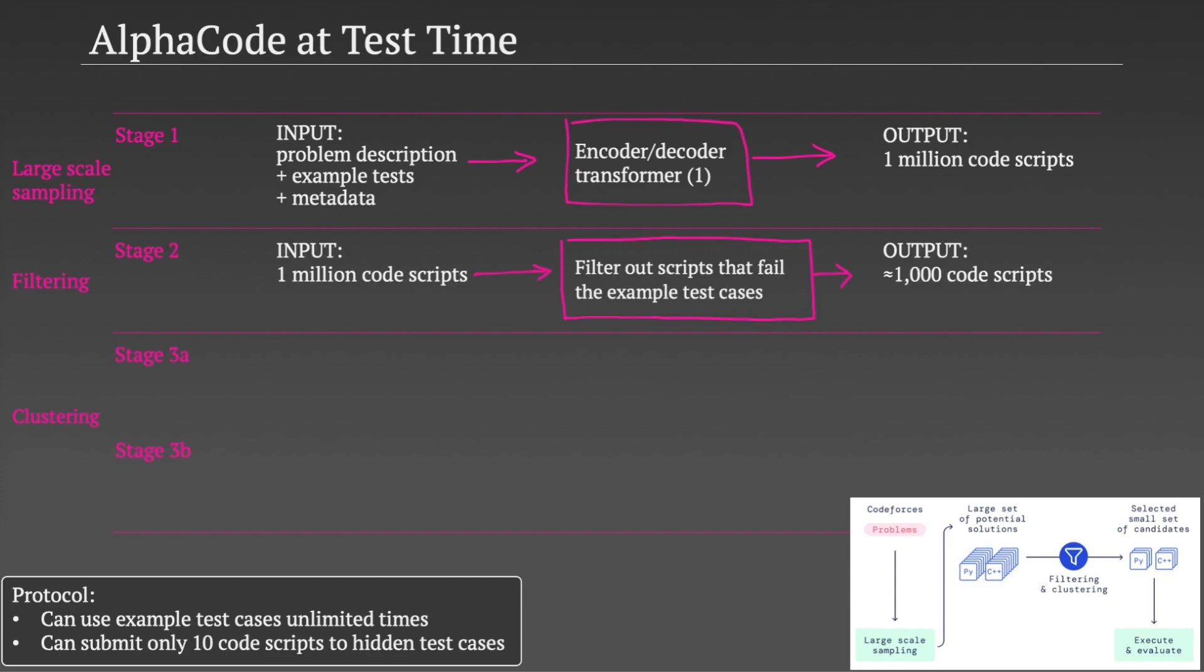Given the protocol they use, the quick obvious thing to do is simply to test all of the one million scripts on the example test cases. Around 99% of the generated scripts will fail these example tests, and so they can directly exclude them. This reduces the number of scripts to the order of thousands. The exact number varies a lot depending on how hard the problem is.